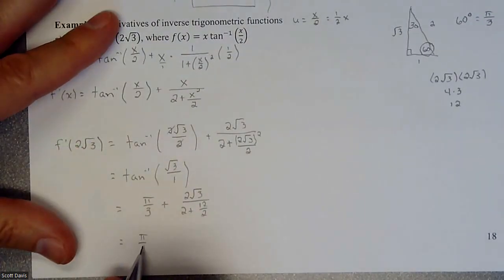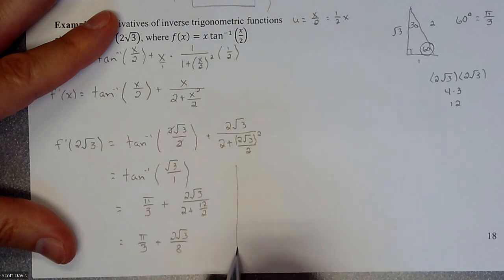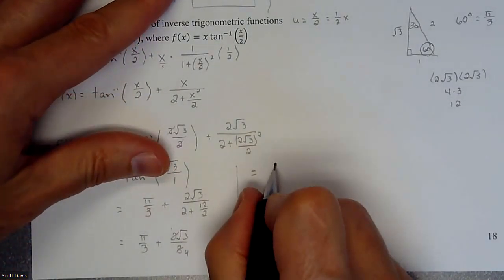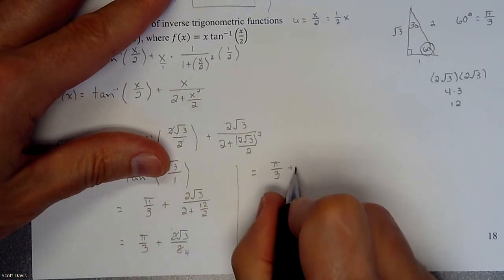We got a pi over three, plus two root three, over that's six, seven, eight. And so that simplifies to a one that simplifies to a four. And we are looking at our final answer of a pi over three, plus a root three, over four.